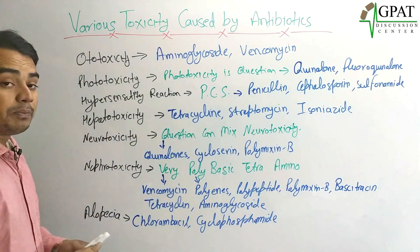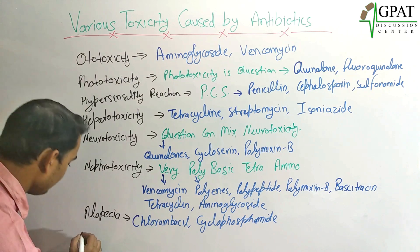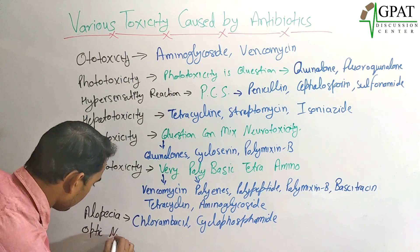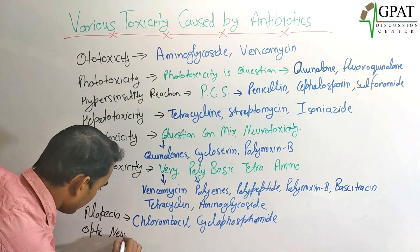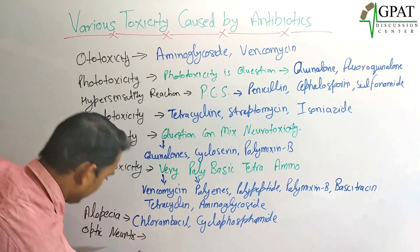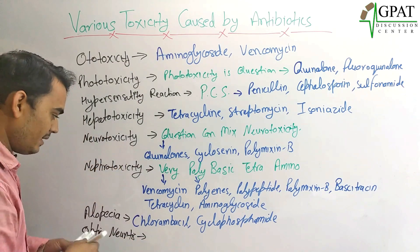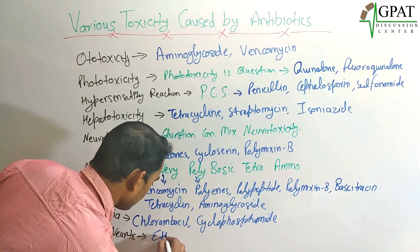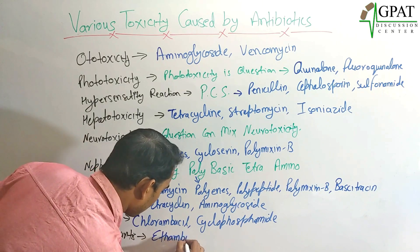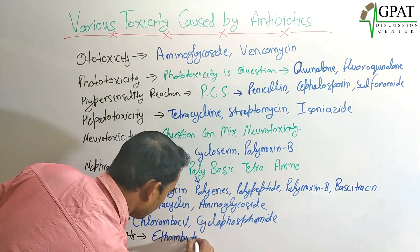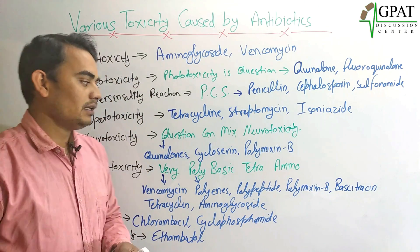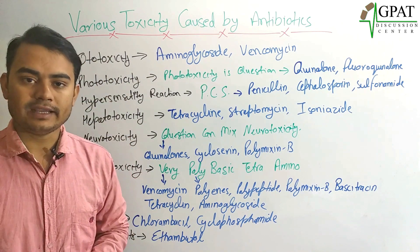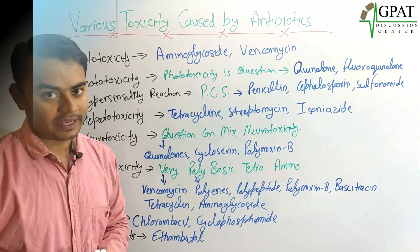The next toxicity is optic neuritis. Optic neuritis is caused by ethambutol. So these are the antibiotics and their various toxicity reactions. Thank you.